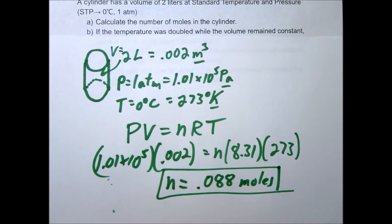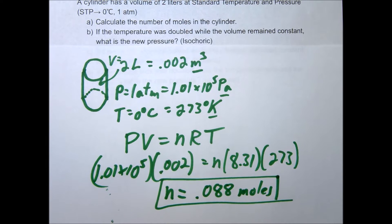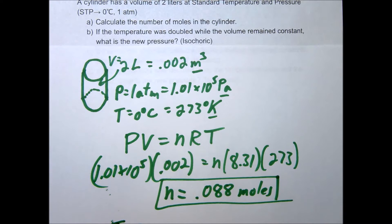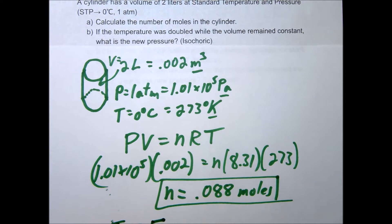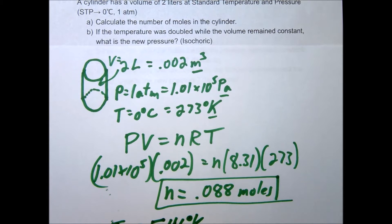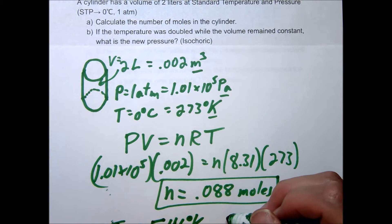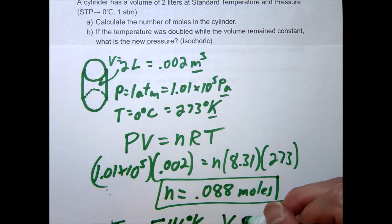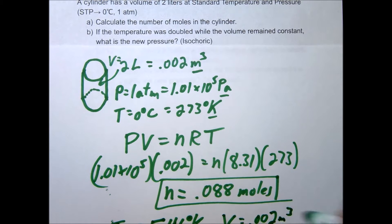In question B, we are doubling the temperature and holding the volume constant. Our new temperature TB is double the original 273 kelvins, so that's 546 kelvins. Holding the volume constant has a name — this is called an isochoric process. So volume stays at 0.002 meters cubed.